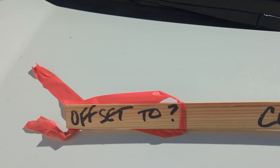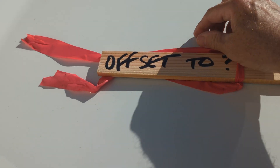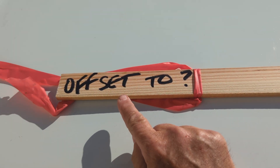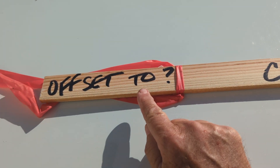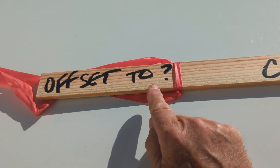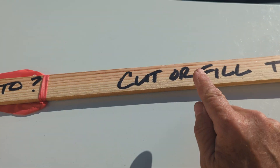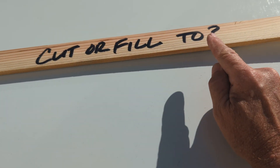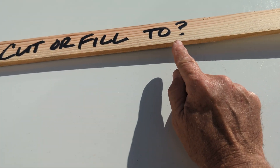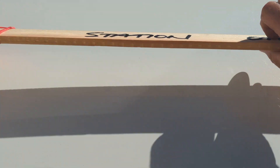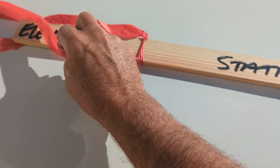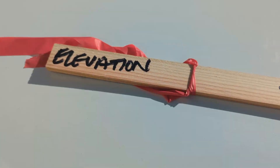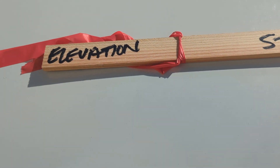Basically, on every stake you should have an offset — it's usually on the top — offset, and then to what. Then you'll have a cut or fill to something that you're grading it to. That's the way we do it; other places may do it different, but this is the order we go.